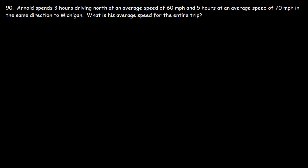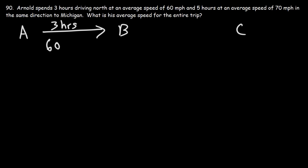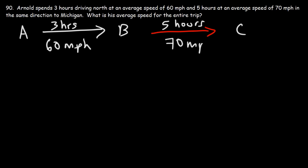Number 90. Arnold spends 3 hours driving north at an average speed of 60 miles per hour and 5 hours at an average speed of 70 miles per hour in the same direction to Michigan. What is his average speed for the entire trip? So he's traveling in one direction but at different speeds. Let's say he's at point A and wants to get to point C, with point B in the middle. During the first part, it takes 3 hours at 60 mph. During the second part, it takes 5 hours at 70 mph.